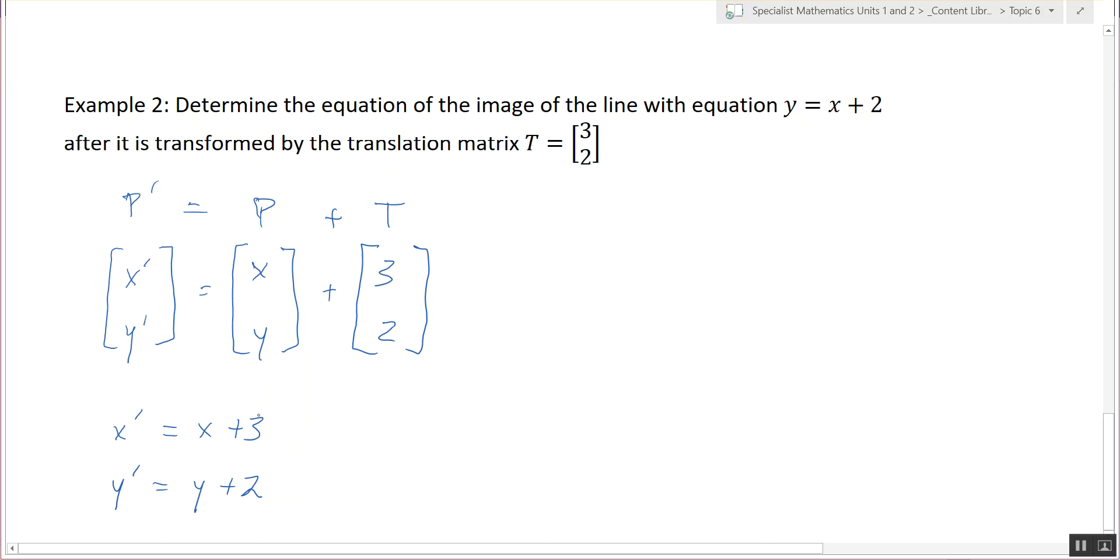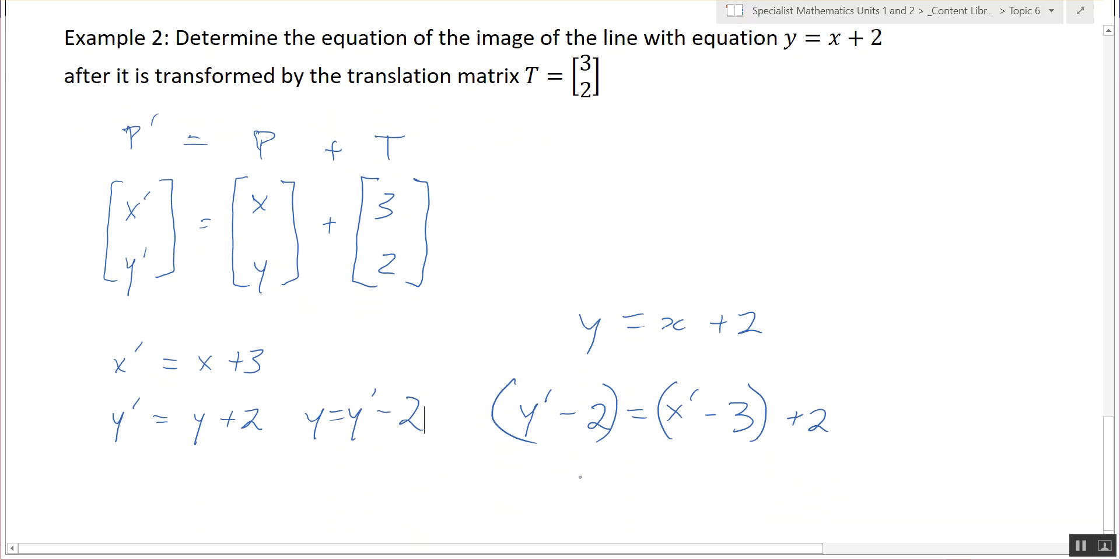You sub these into that equation. Does that make sense? So instead of y, what are we going to have? Y dash take two. Instead of x, what are we having? And we have a plus two at the end, and I've substituted that where y is. So then y dash equals x minus three plus two plus two. There we go like that.